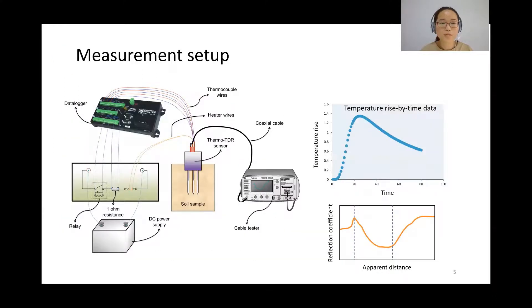For the experiment setup, here is the circuit panel to control the thermal TDR sensor to release the heat pulse and also the sensor can connect to the cable tester or the TDR100 device. All these measurements were made and a data logger can automatically record these measurements like temperature rise by time data and also it can record TDR waveforms.